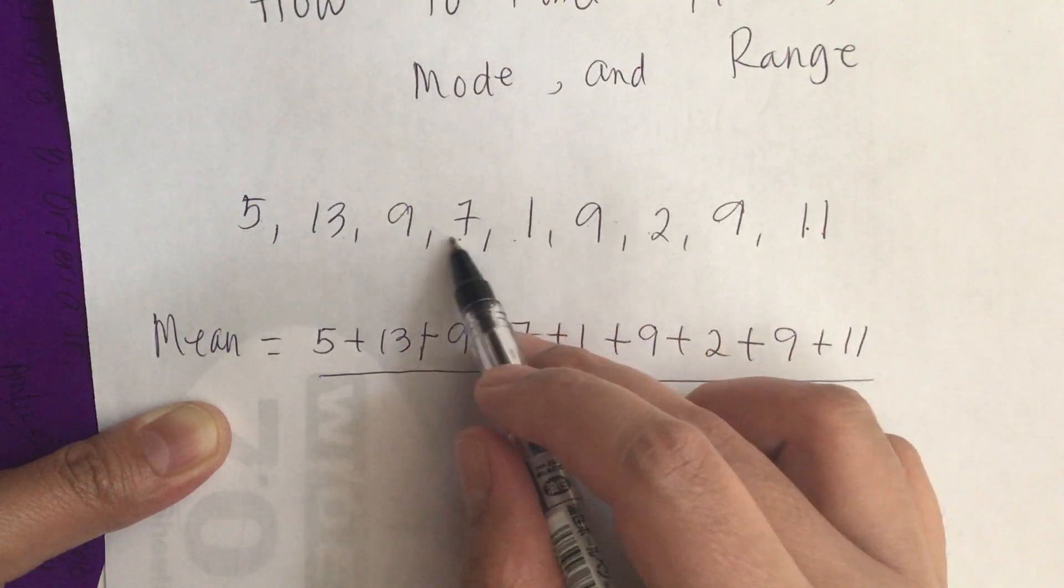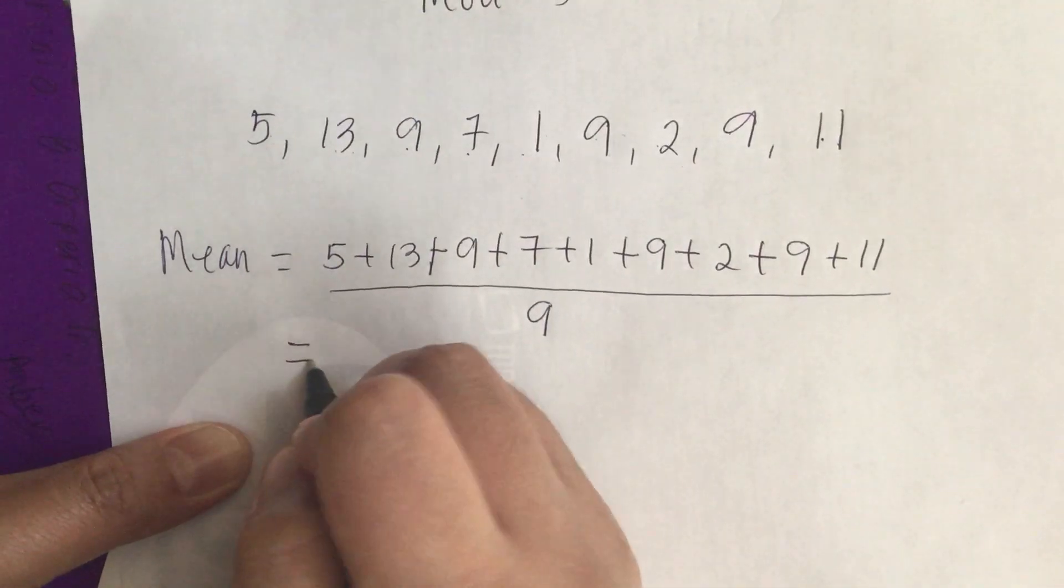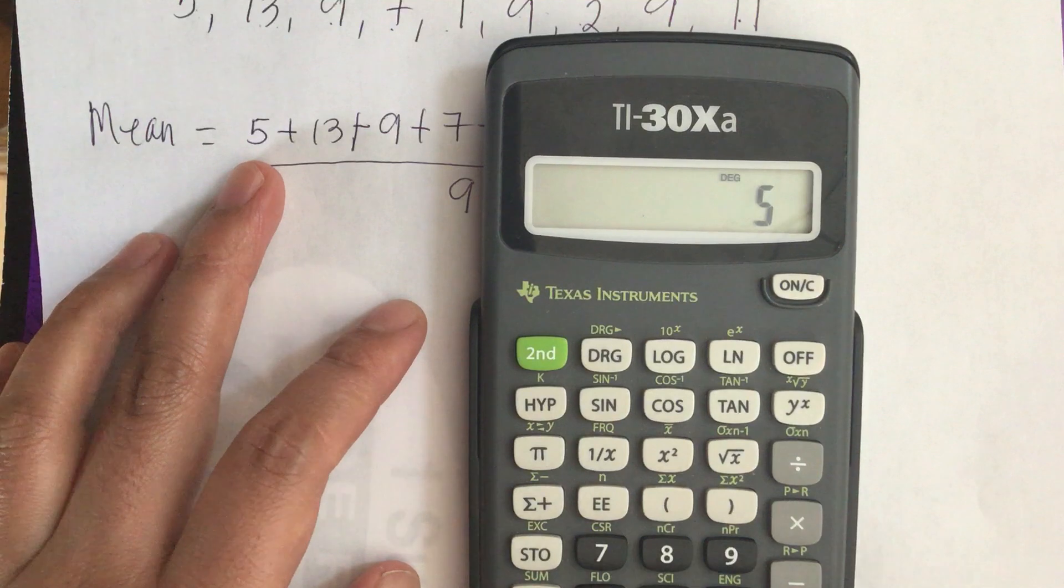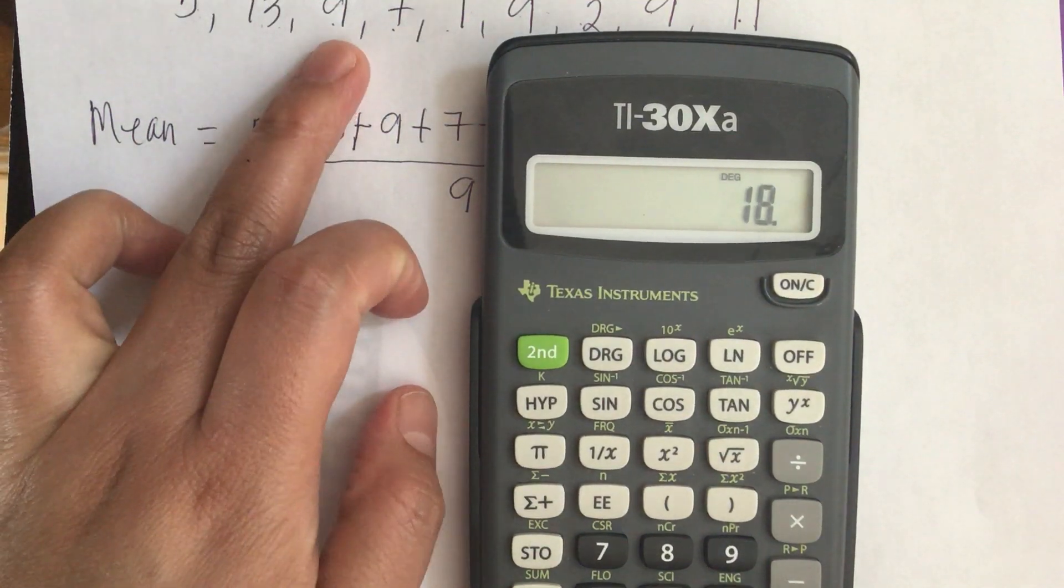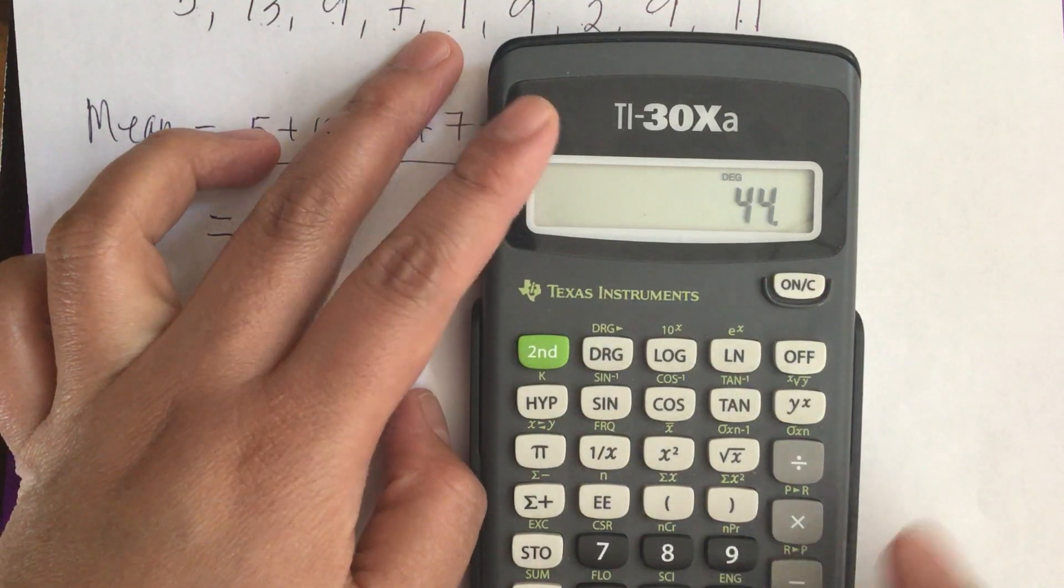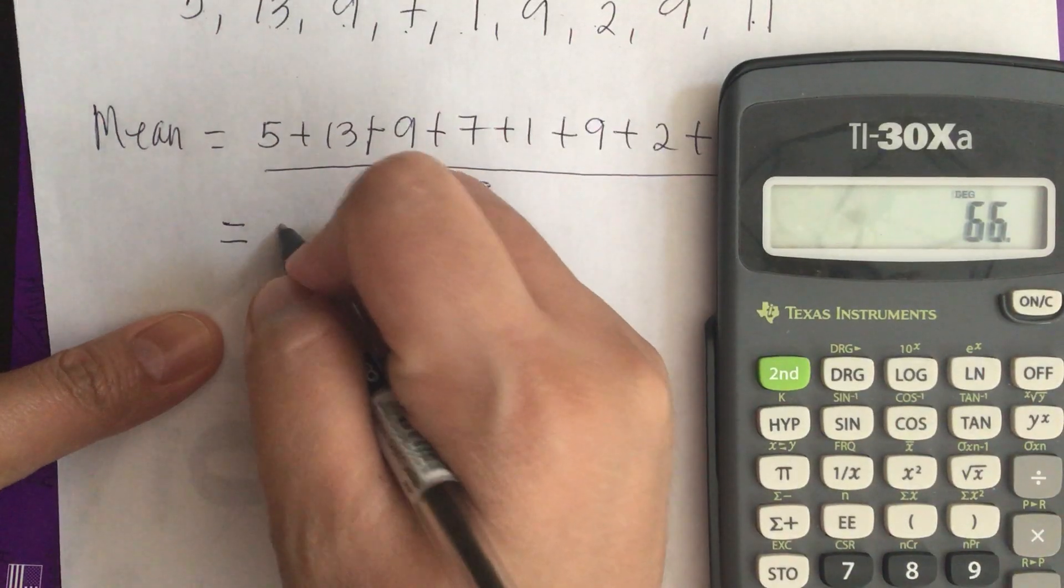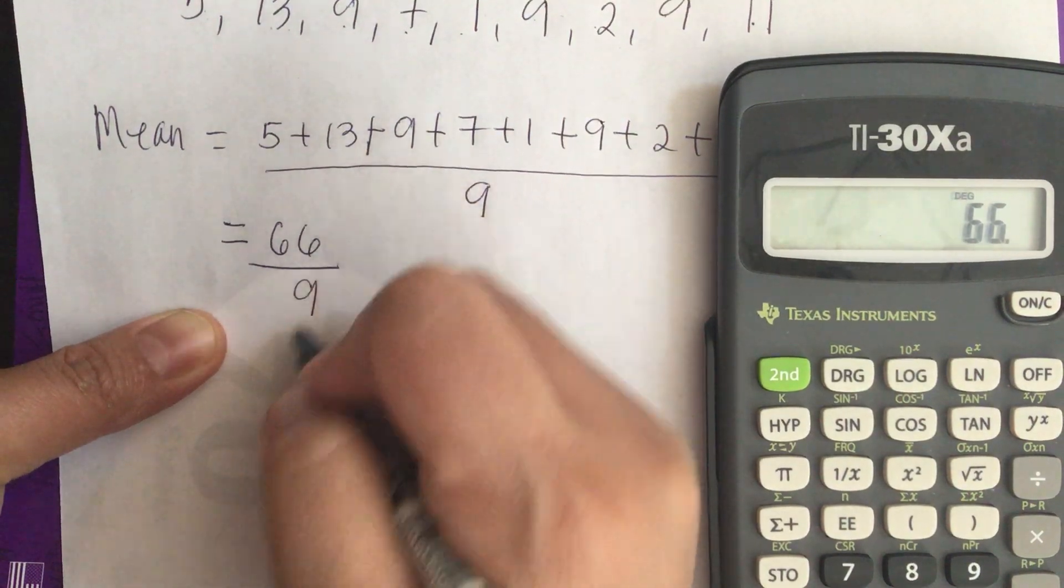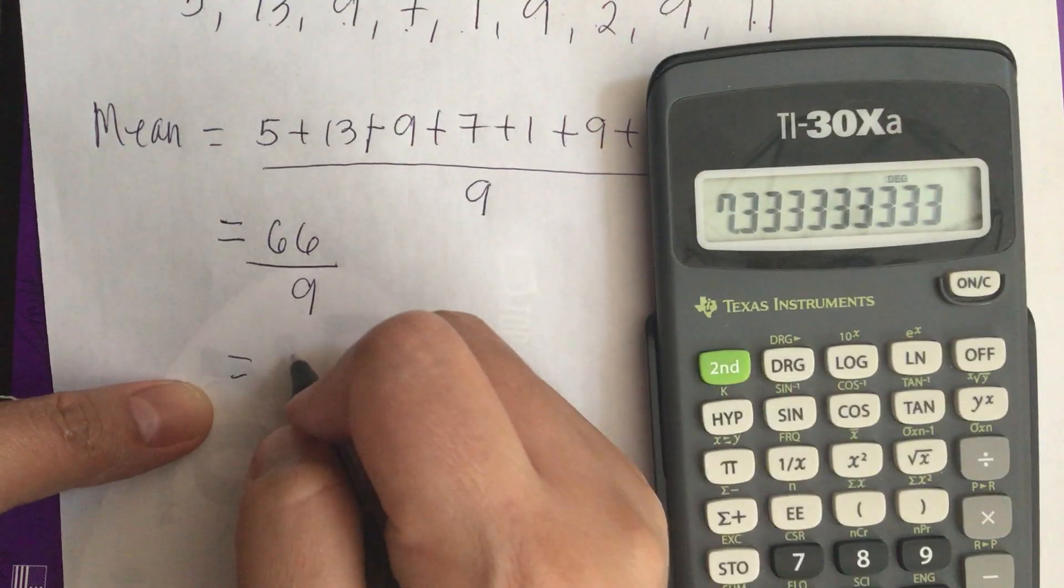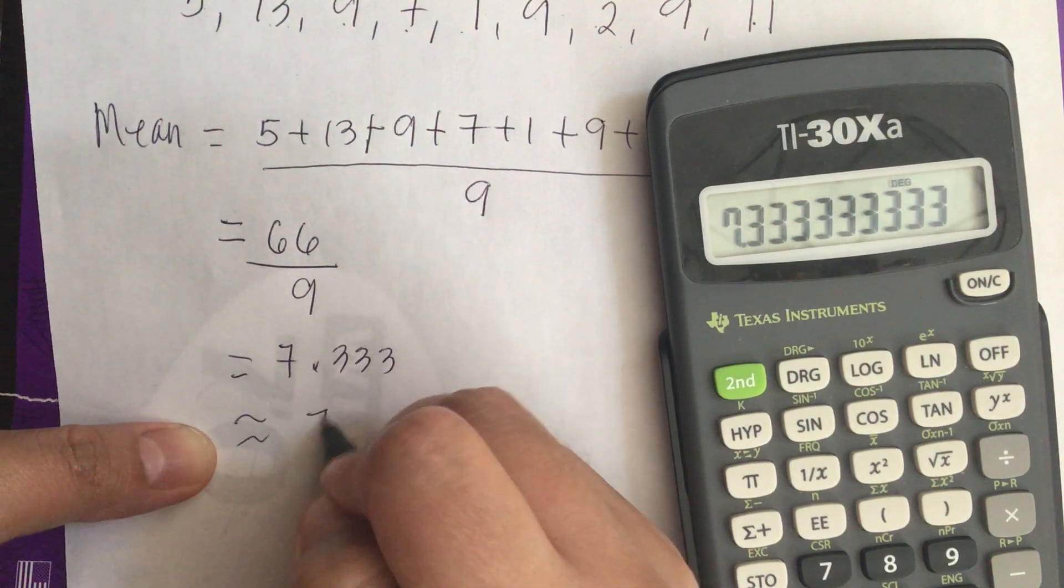1, 2, 3, 4, 5, 6, 7, 8, 9. So this is divided by 9. We punch into our calculator. We have 5 plus 13 plus 9, plus 7, plus 1, plus 9, plus 2, plus 9, plus 11. And it's equal to 66 over 9.